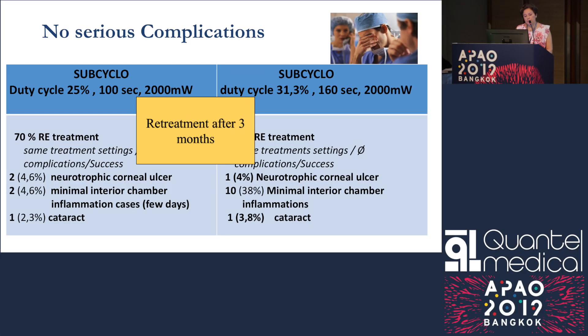Regarding tolerance, there were no serious complications. The most common complication in both groups was anterior chamber inflammation, which resolved within one to two weeks. Inflammation was higher in the second group than in the first. In the first group, we saw more treatment failures. When IOP does not lower sufficiently, we suggest retreatment after three months.